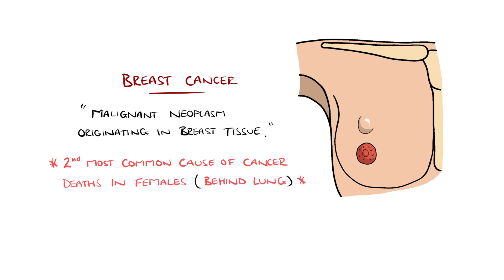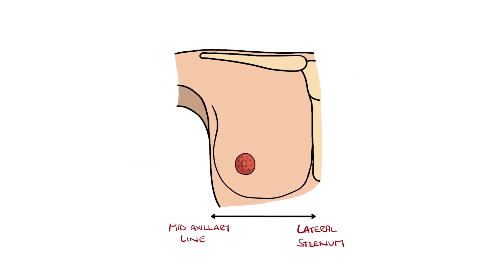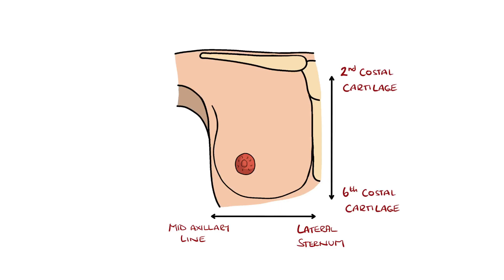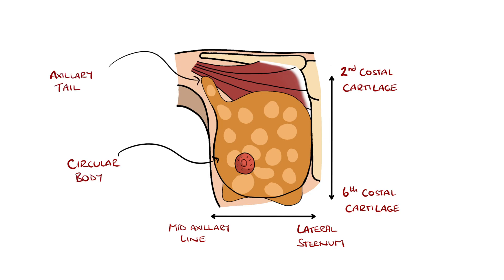Normally, the female breast extends from the lateral border of the sternum to the mid-axillary line, and vertically from the second to the sixth costal cartilage. It is largely made up of two regions: the circular body, which is the largest part, and the axillary tail, which is a smaller part that runs along the inferior lateral edge of the pectoralis major muscle towards the armpit.